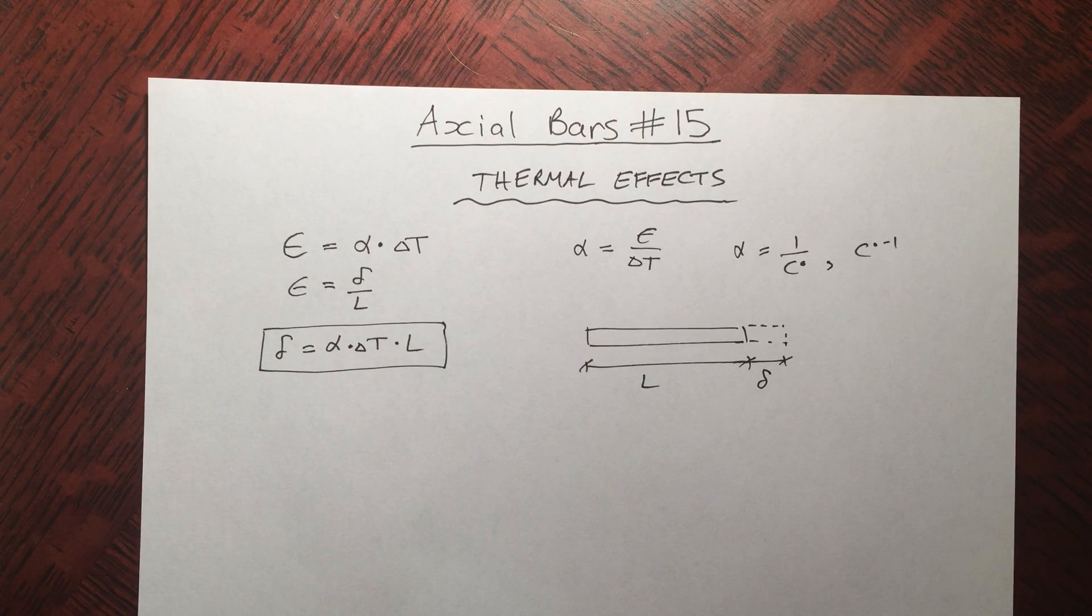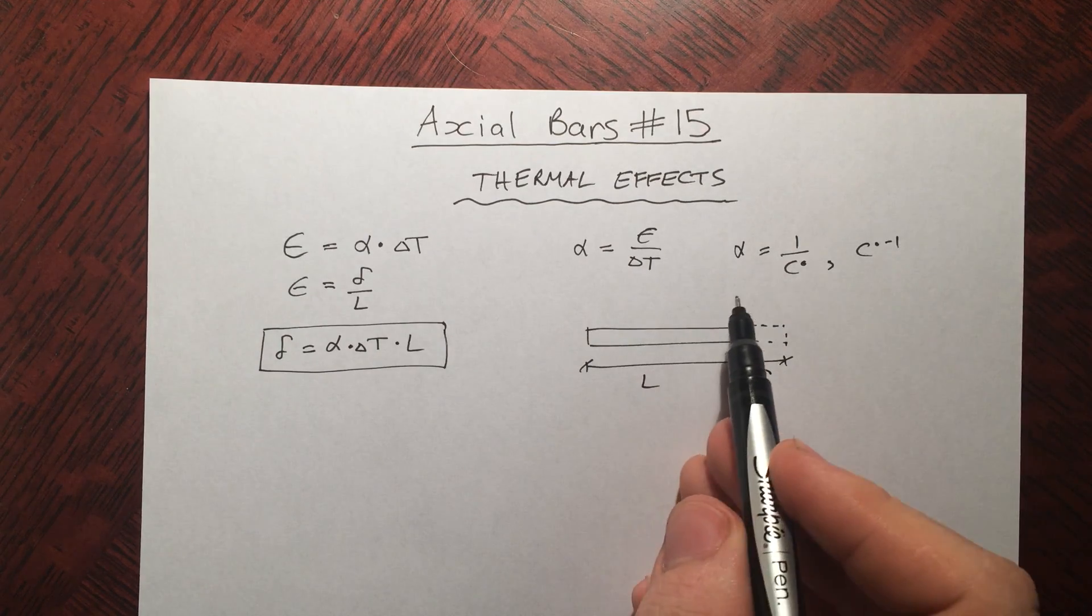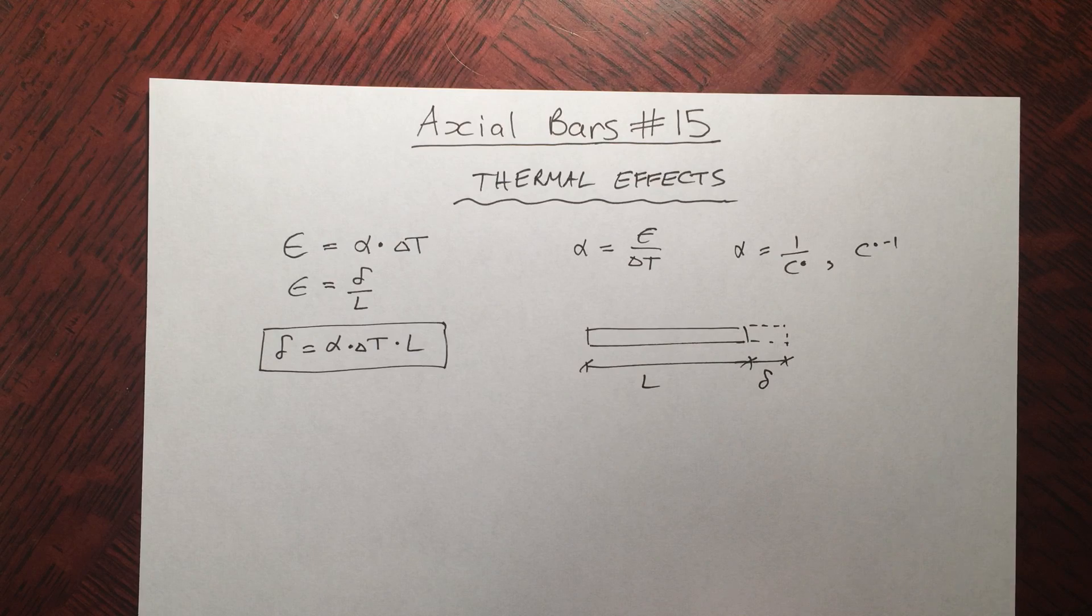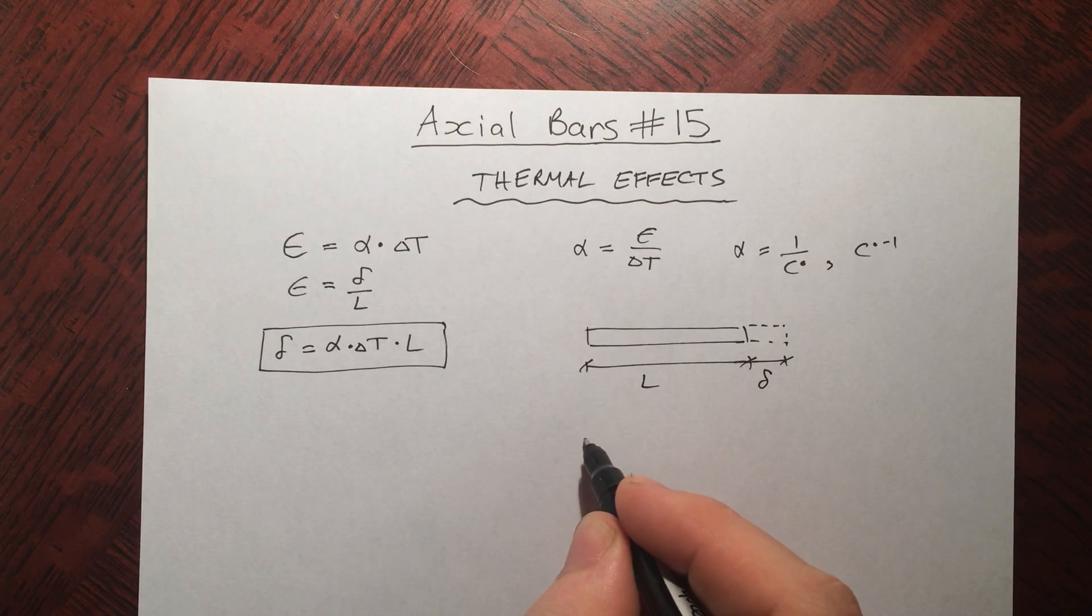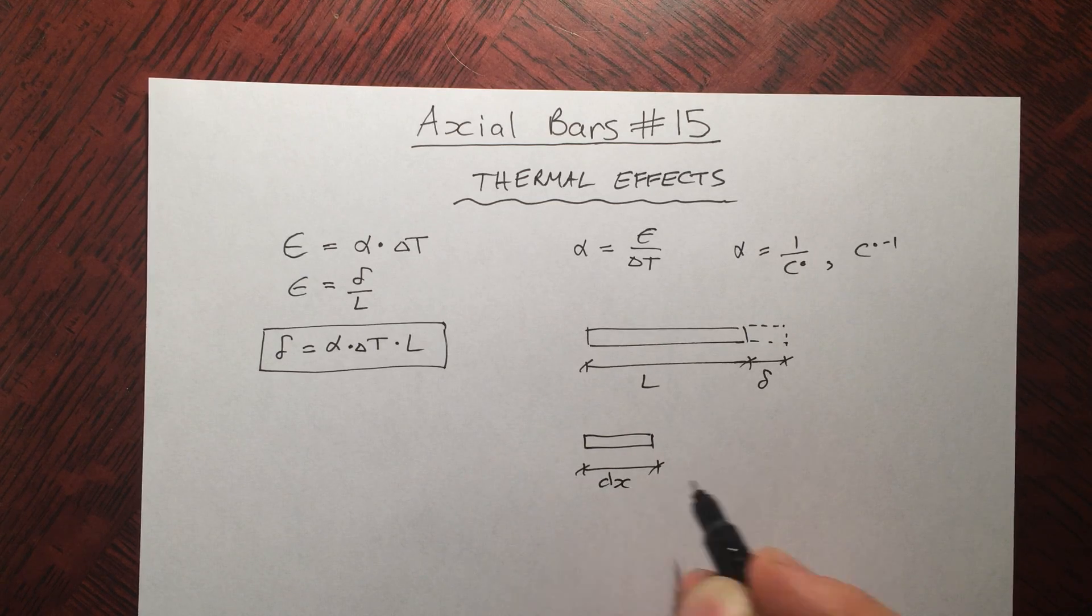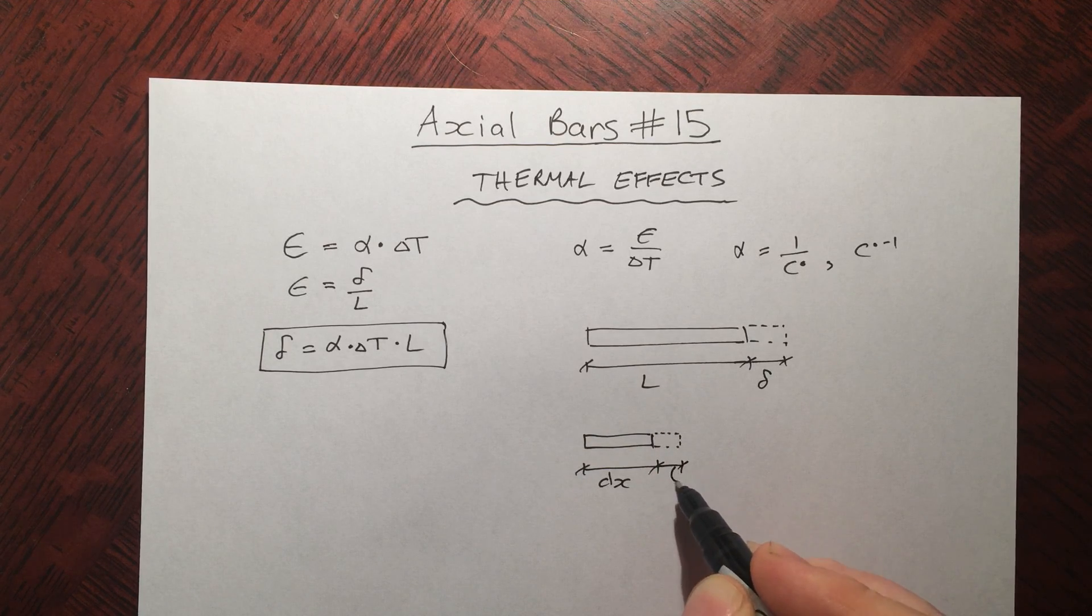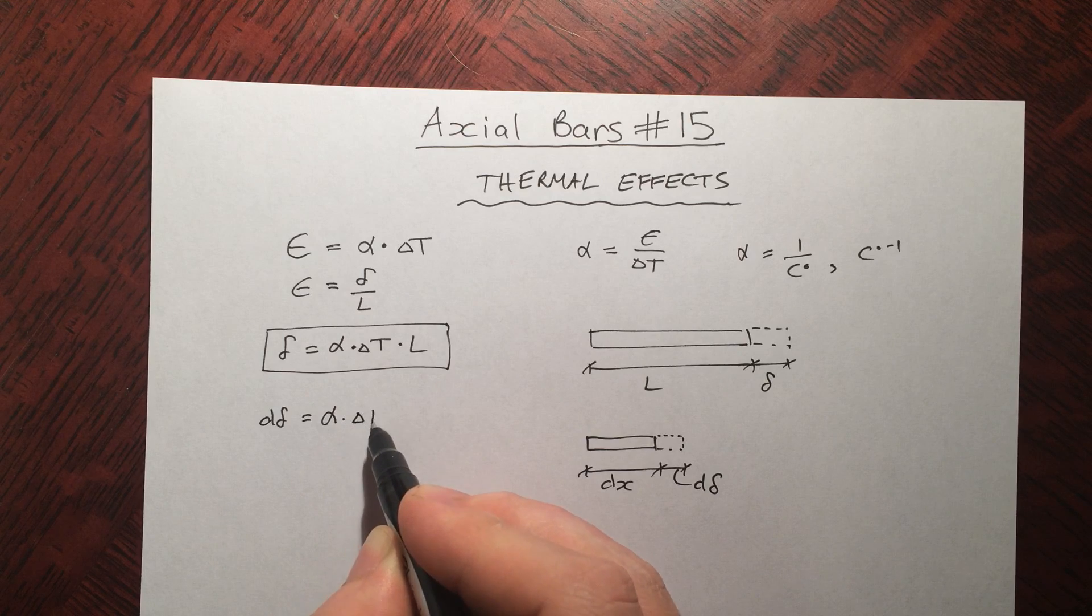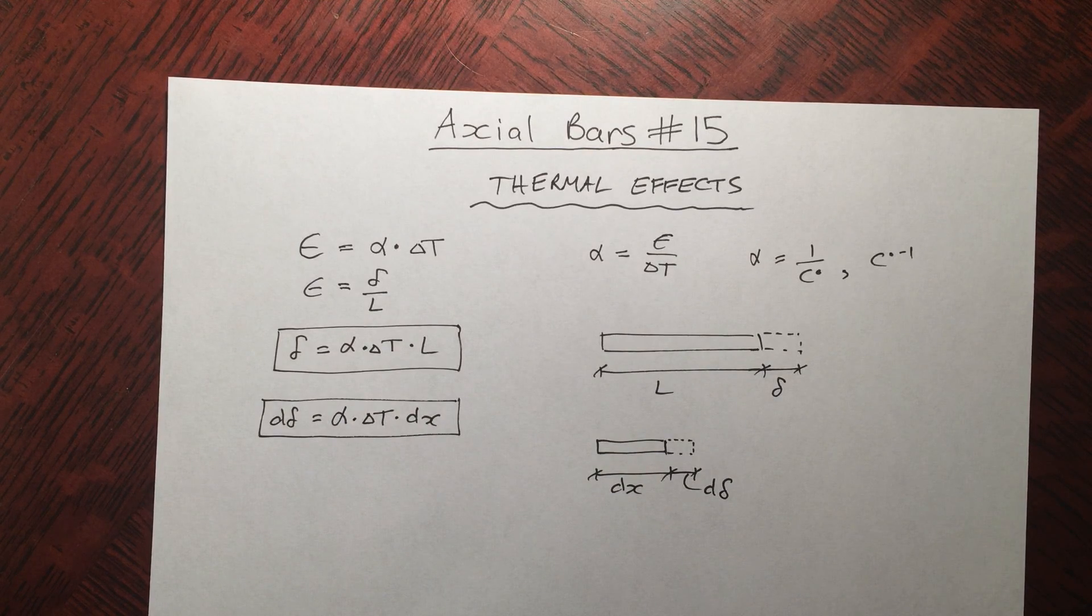Now it's also useful to have a differential form of this equation, because you can imagine temperature effects are not always discrete. You can imagine a bar that's slowly getting heated up more toward this end and not so much toward this end. I actually have an example of this in one of my next videos. But just intuitively, you can imagine this L shrinking down all the way to a very tiny differential length dx. Now this dx, you give it some temperature, that little segment is going to increase by the amount d delta. So you just rewrite this equation: d delta equals alpha delta T dx. There we go. Those are the two equations that we're going to be using in the future.